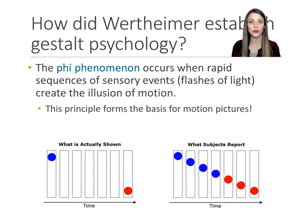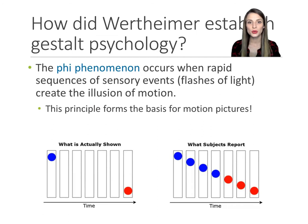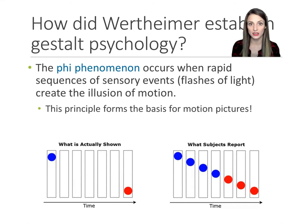In his founding article, Wertheimer wrote about something called the Phi Phenomenon. Some people call it the apparent motion effect, but he didn't like that label because he felt it didn't clearly describe what was going on. The Phi Phenomenon is the tendency for two lights flashed very quickly after one another in two different locations to appear as though it is one light moving.